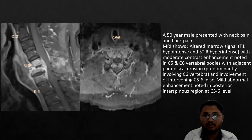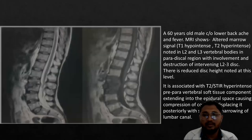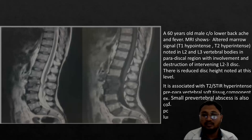In the next image, we can see a 50-year-old male presented with neck pain and back pain. On MRI, there is altered marrow signal — T1 hypointense and STIR hyperintense — with moderate contiguous enhancement noted in C5 and C6 vertebral bodies, with adjacent paradiscal erosion and involvement of the intervening C5-C6 disc. Mild abnormal enhancement was noted in the posterior interspinous region at the C5-6 level. Here are a few other images of the participants included in the study, involving different regions in Pott's spine.